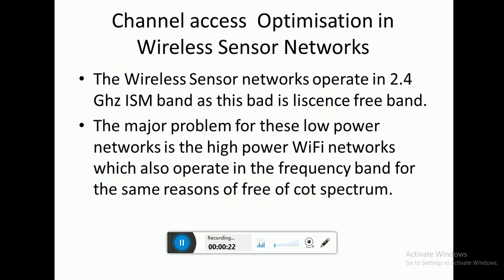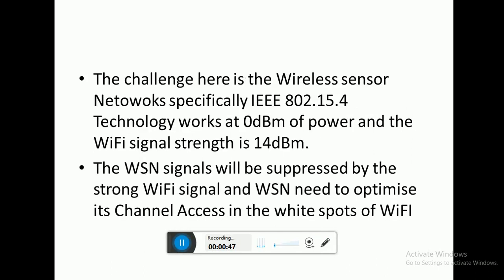The task taken here is Channel Access Optimization in Wireless Sensor Networks. The wireless sensor networks operate in the 2.4GHz ISM band, as this band is a license-free band. The major problem for these low-power networks is the high-power Wi-Fi networks, which also operate in the same frequency band. Specifically, the IEEE 802.15.4 technology works at very low power — 0 dBm — whereas the Wi-Fi signal strength is 14 dBm.